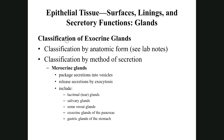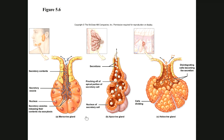When classifying exocrine glands by method of secretion, there are three types. Merocrine glands release secretions from vesicles directly from the cell surface — like small bubbles released straight out. A good test example of a merocrine gland is the salivary gland.